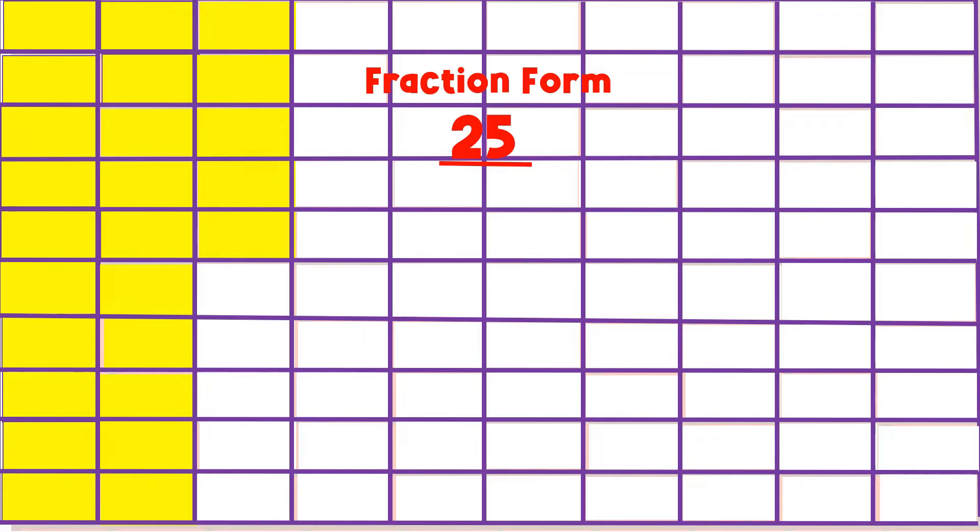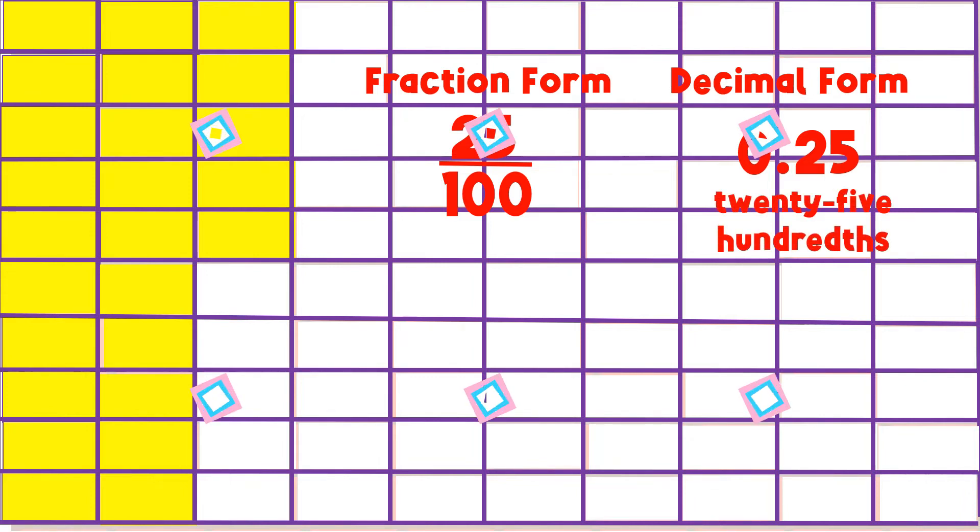Suppose that we are dividing the whole into 100 parts. Now let's color 25 parts with yellow. What is the fractional part of the yellow color? Yes, you are right. It is 25 hundredths, or 25 out of 100. In decimal form, we write 0.25. Another example: we are dividing the whole into 100 parts.